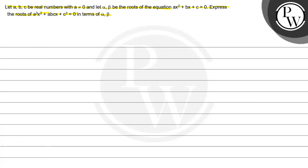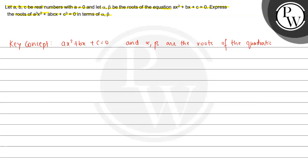The key concept we are going to use here is: for the quadratic equation ax² + bx + c = 0, where alpha and beta are the roots, we have alpha + beta = −b/a and alpha × beta = c/a.